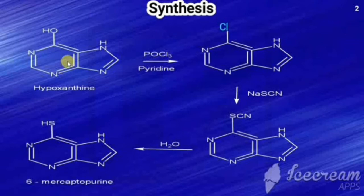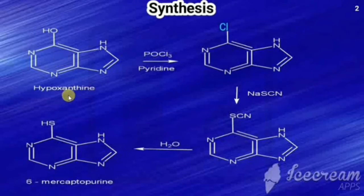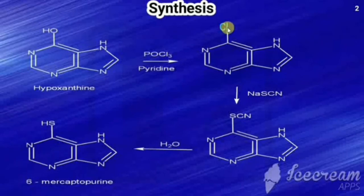The starting material is hypoxanthine. Purine is the fusion of pyrimidine with imidazole, and when it has a hydroxy group at the sixth position it is called hypoxanthine — that is, 6-hydroxypurine. This starting material is treated with POCl3 (phosphoryl chloride or phosphorus oxychloride) in the presence of pyridine, and the hydroxy group is replaced by a chloro group via chlorination.